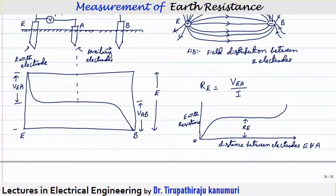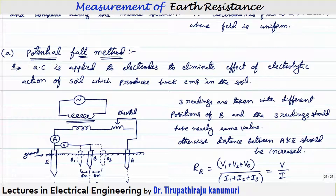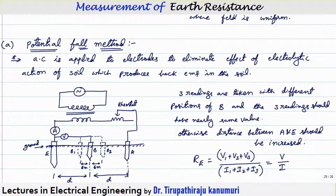The disadvantage of using DC is that it leads to the electrolytic action of the soil, which leads to the production of some EMF. That EMF will interfere with the main voltage being applied, creating a problem in the measurement. Briefly speaking, if you give DC it may lead to electrolytic action and give a wrong result. In order to avoid that, we do not give DC practically — we always give AC.